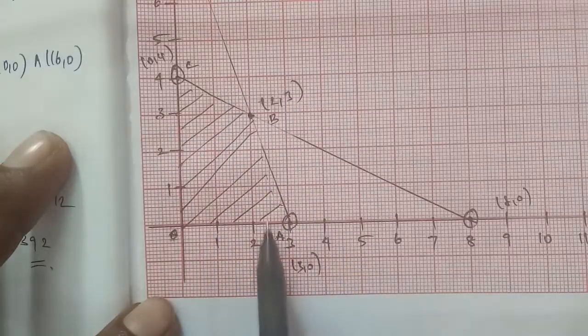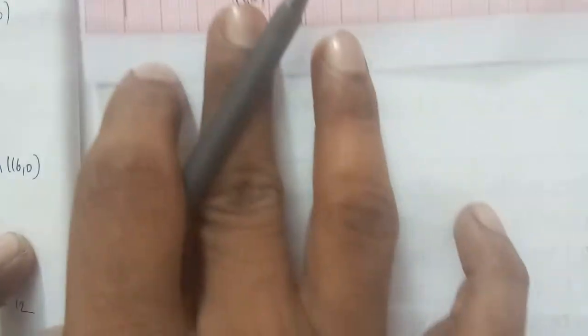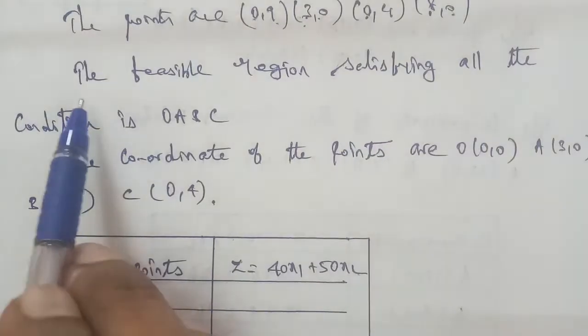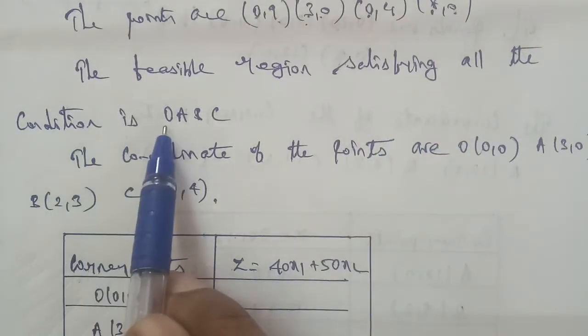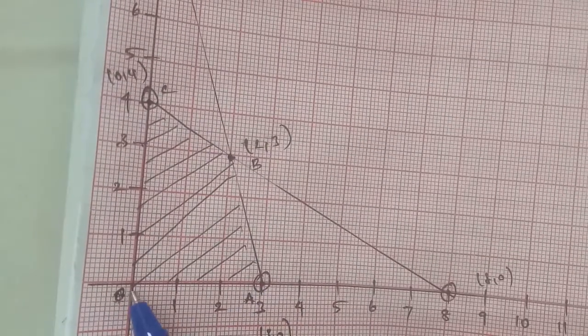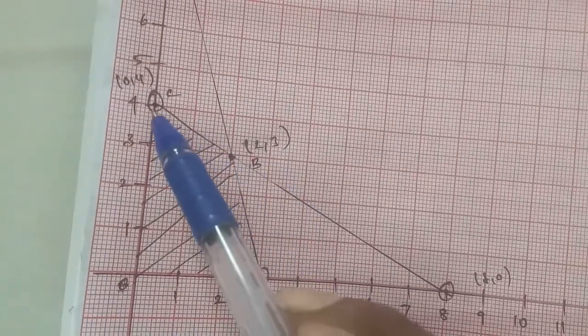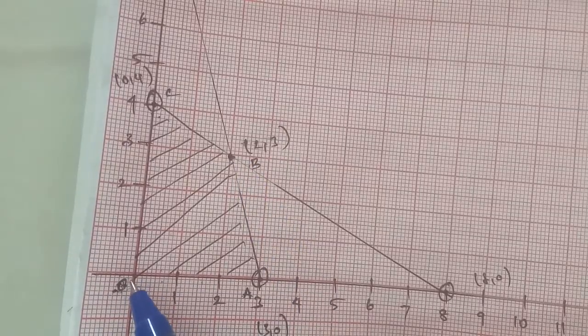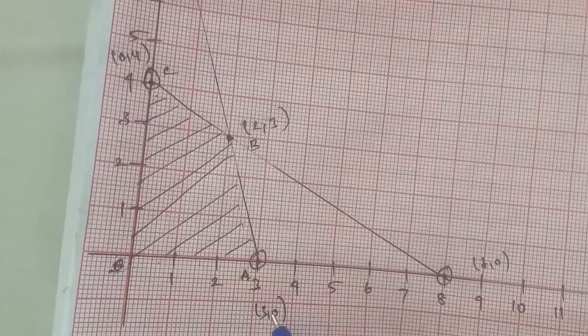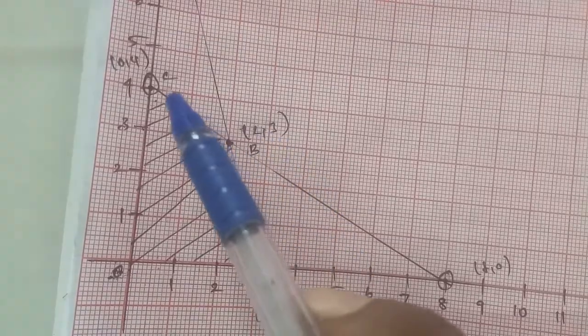The feasible region corner points are O, A, B, C. The corner points are: O is (0,0), A is (2,3) — that is x1 equals 2 and x2 equals 3, B is the intersection point, and C is (0,4). So these are the corner points to be entered in the table.